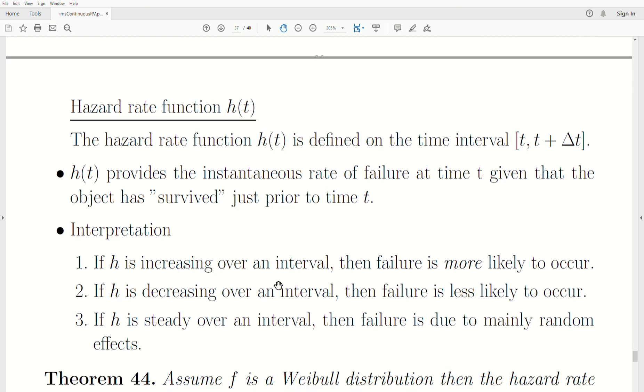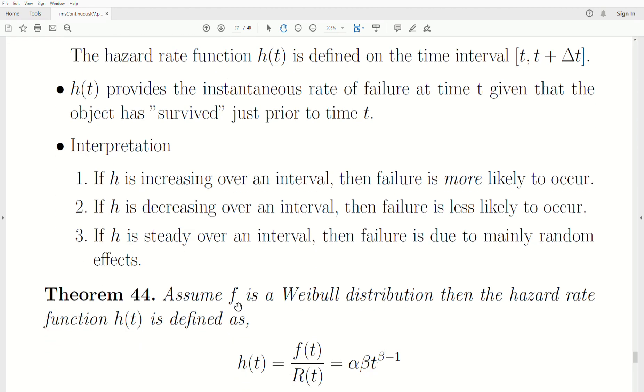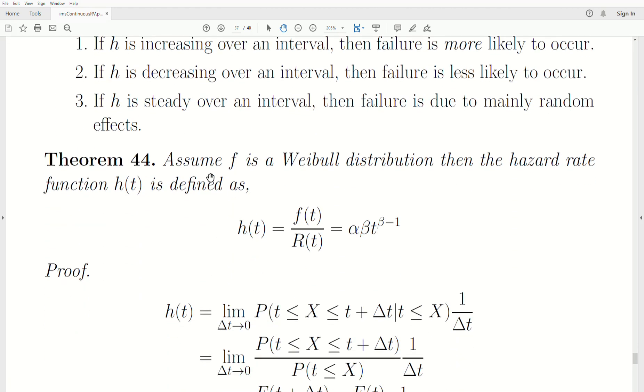To interpret the hazard rate: if h is increasing over an interval, then failure is more likely. If h is decreasing over an interval, then failure is less likely. If the hazard rate function is steady over an interval, then failure is due mainly to random effects.